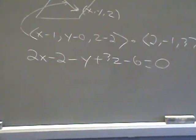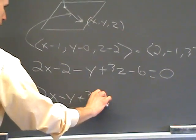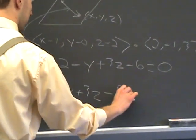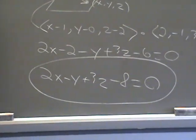And then after that, all you have to do is group the terms. 2X minus Y plus 3Z minus 2 minus 6 is minus 8 equals zero. And that's your equation of the plane.